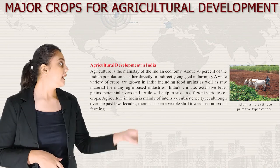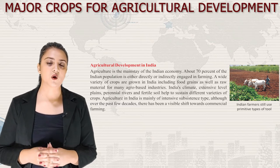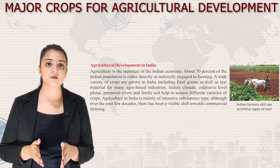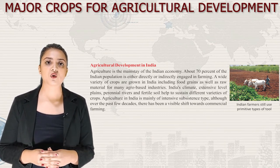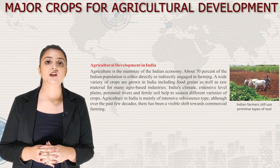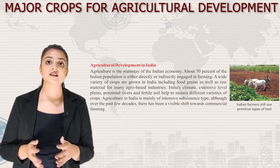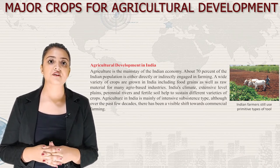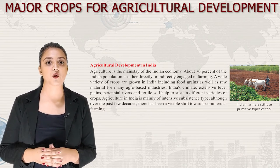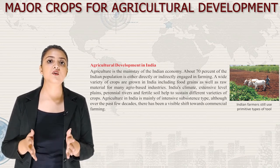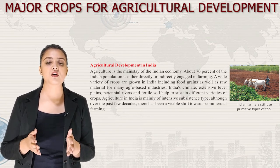Now let's talk about agricultural development in India. Agriculture is the mainstay of the Indian economy. About 70% of the Indian population is either directly or indirectly engaged in farming. A wide variety of crops are grown including food grains and raw material for many agro-based industries. India's climate, extensive level plains, perennial rivers and fertile soil help sustain different varieties of crops. Agriculture in India is mainly of intensive subsistence type, although there has been a visible shift towards commercial farming over the past few decades.